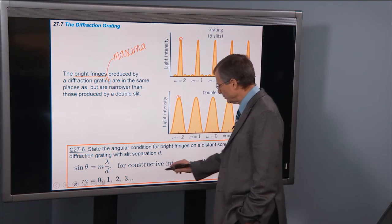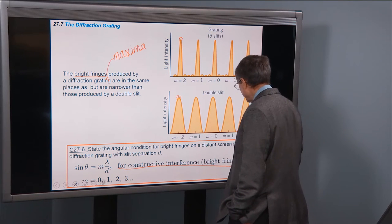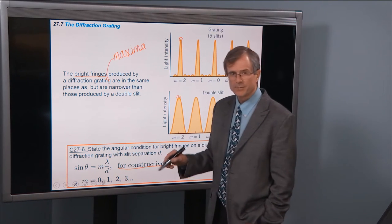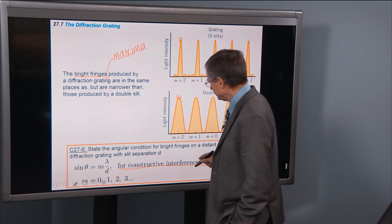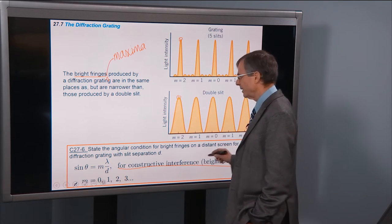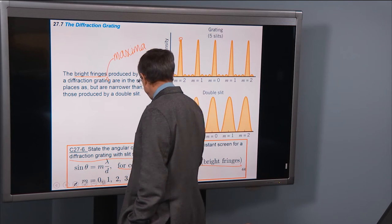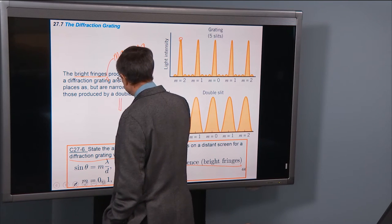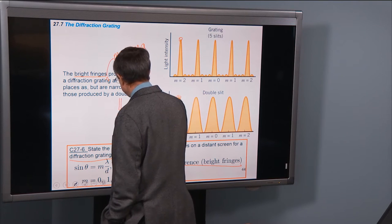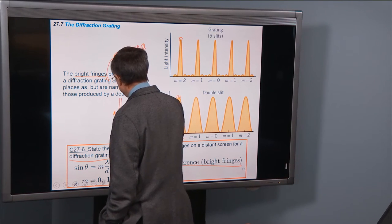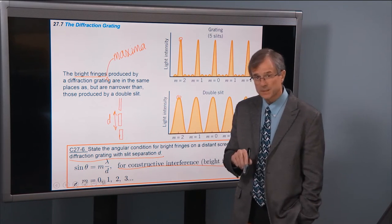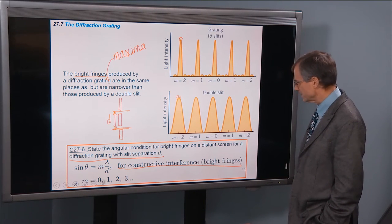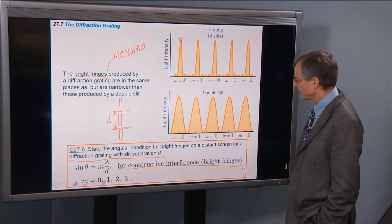So we're back to the constructive interference, bright fringes. Sin theta is m lambda over d. This is exactly the same as we saw for two-slit interference. But this is bright fringes on a distant screen for a diffraction grating, with a slit separation d. So this is a distance between the slits. Now, instead of being the slit width, this is a distance center to center, centered to center between the slits. Slit separation. And that's where the maxima are.